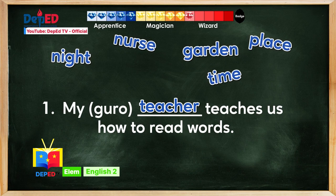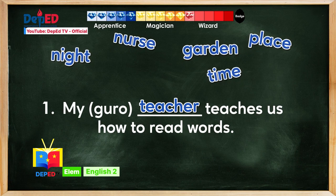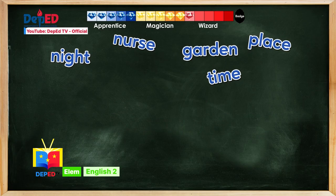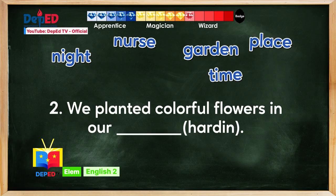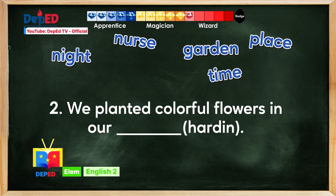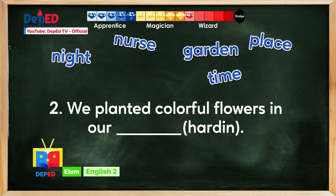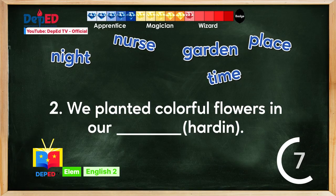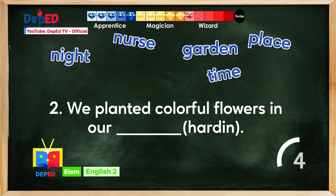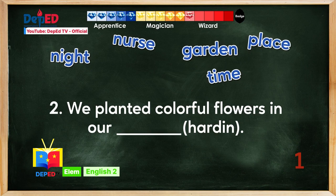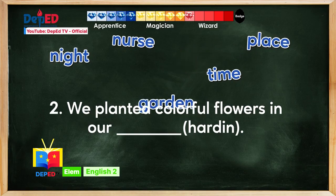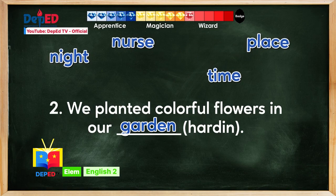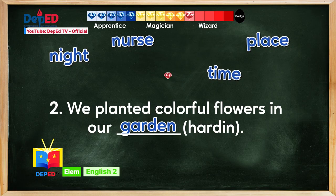Second sentence: We planted colorful flowers in our blank. What is the English equivalent of the word in parenthesis? The timer has run out — what did you choose? Great choice, it is garden! Yes, another gem earned! Let us read the completed sentence — repeat after me: We planted colorful flowers in our garden.